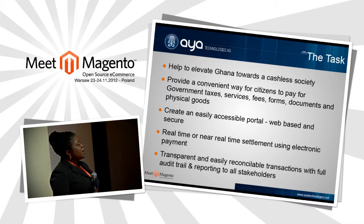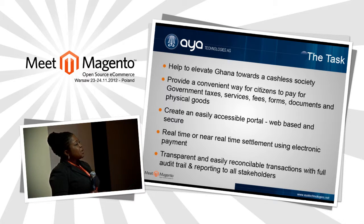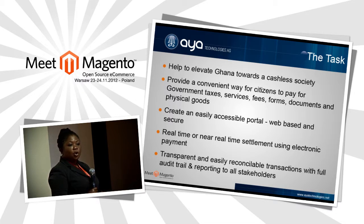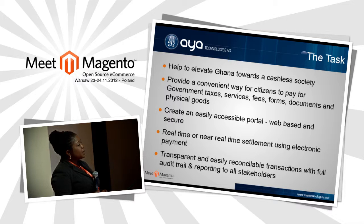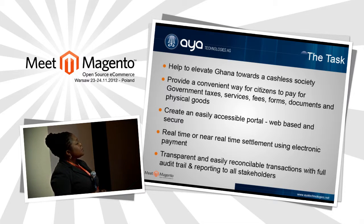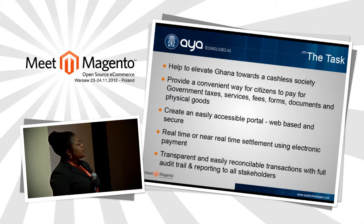Services include income tax payments, passports, marriage registration, and business registration. The platform is meant for payment of all forms of government agency services, starting with about 10 services from select agencies. The task also includes establishment of a portal linked to the government one-stop service portal, plus real-time or near-real-time settlement using electronic payment, transparency, and easily reconcilable transactions with a full audit trail.